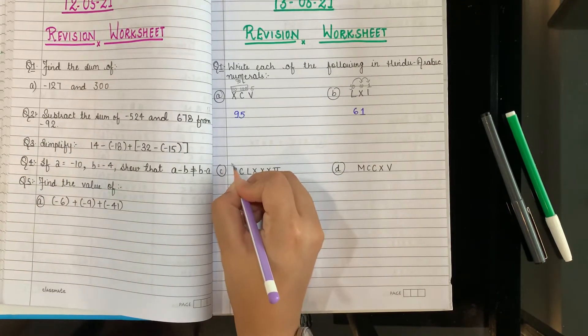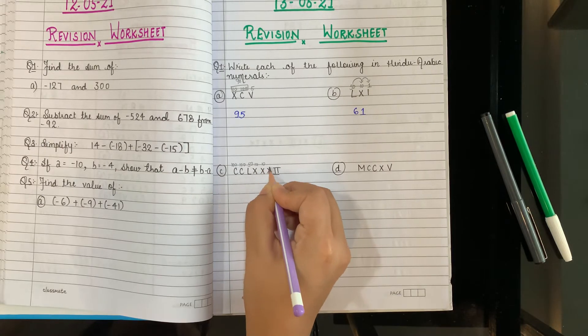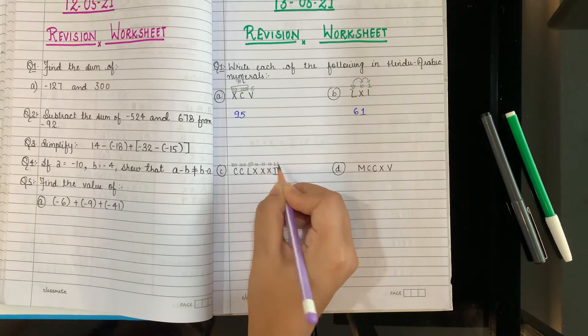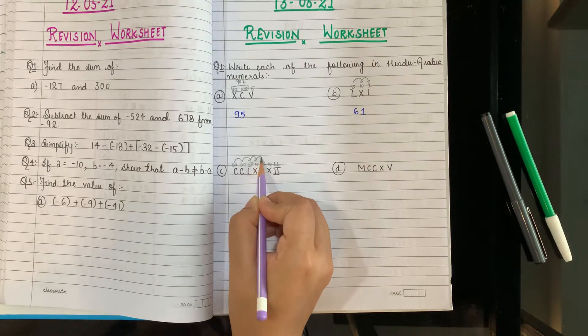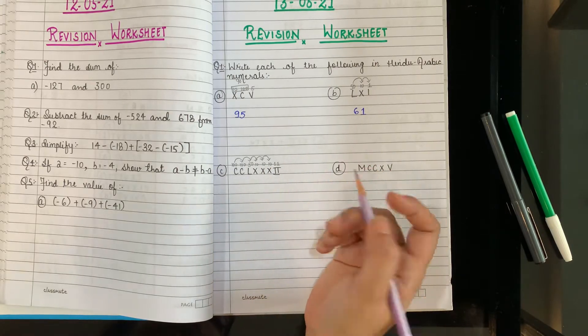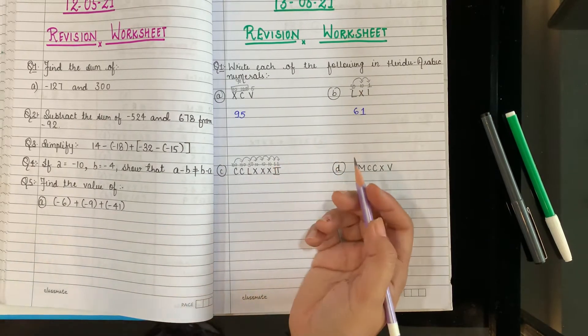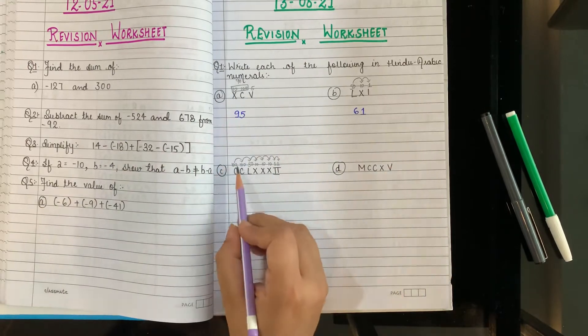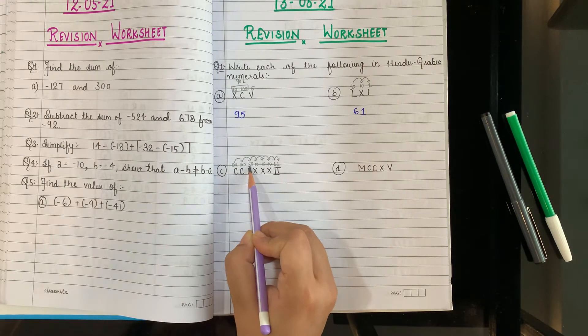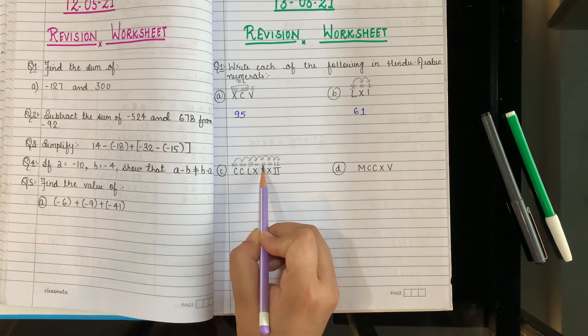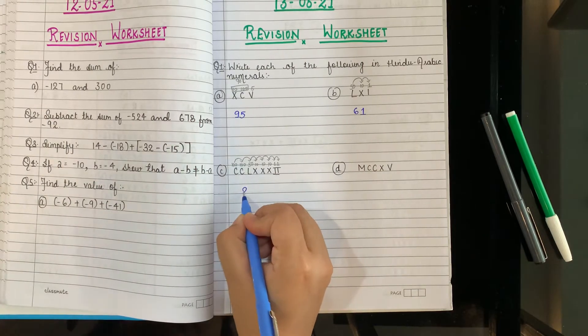Next. This is 50, X is 10, I is 1. Here 50, 10, 10. All are smaller than each other, as we go forward they keep getting smaller, so we'll directly add. 50 plus 10 is 60, 60 plus 1 is 61. So write down 61.